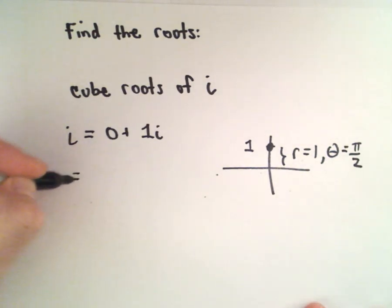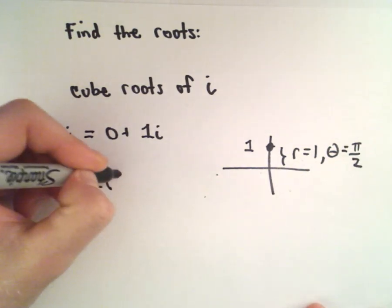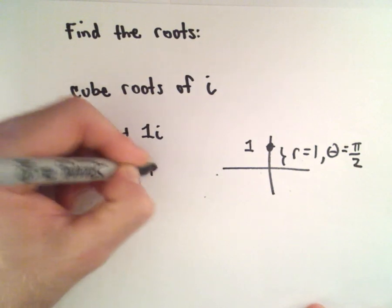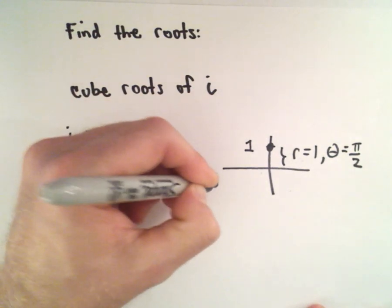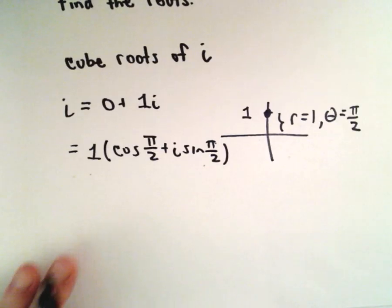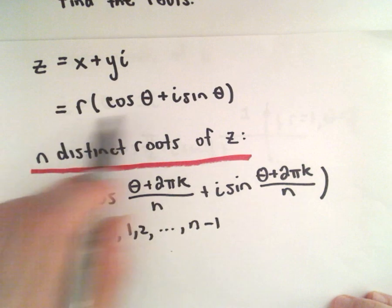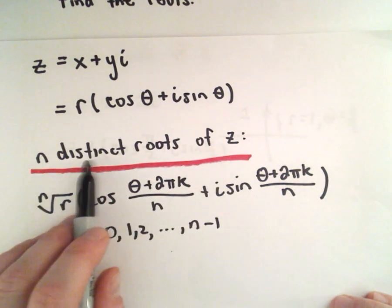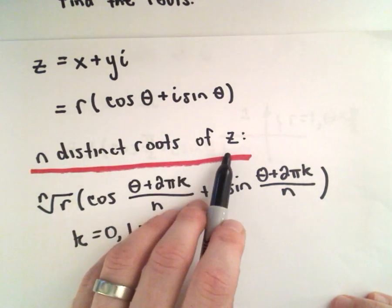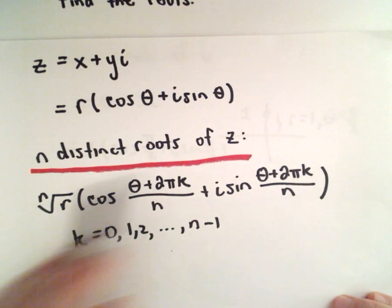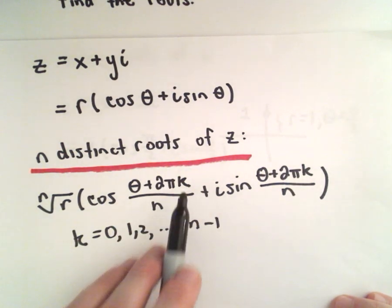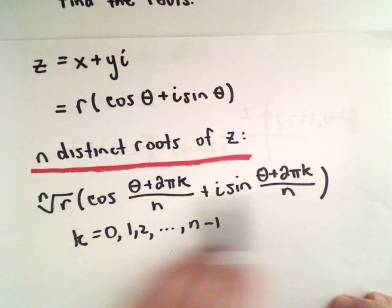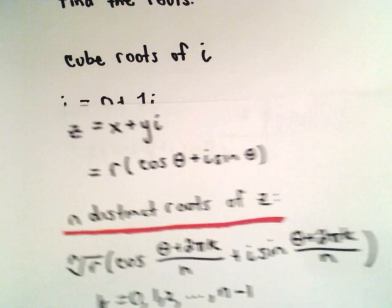In trigonometric form we have 1 multiplied by cosine of pi over 2, plus i times sine of pi over 2. Now we've got our number in trigonometric form. We're going to find the three distinct roots of i using the formula, where k will equal 0, 1, and 2 — we'll run through each case and simplify.